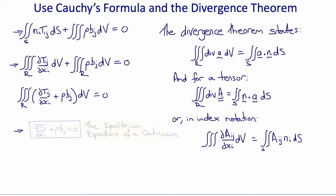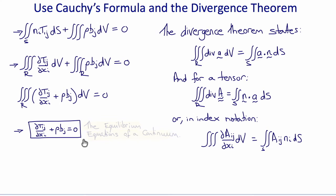At this point we use a common argument in continuum mechanics: because the region R is completely arbitrary and could be arbitrarily small, the integrand itself must be identically zero. Therefore we can ignore the integral and write the differential equation: ∂Tij/∂xi plus rho Bj equals zero. In other words, the divergence of the stress plus rho times the body force equals zero. These are the equilibrium equations of a continuum.